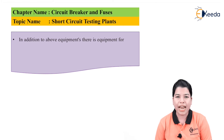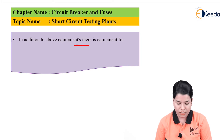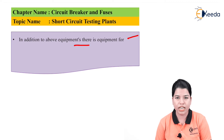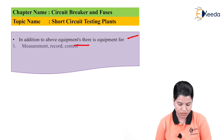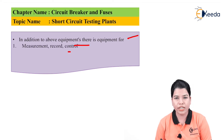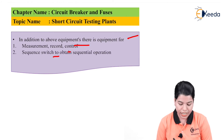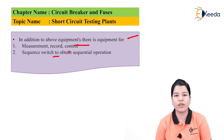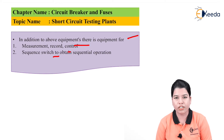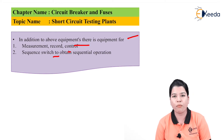Additional equipment includes measuring, recording, and controlling equipment, as well as a sequence switch to obtain sequential operation. The sequence switch decides the proper sequence of operation for the test.